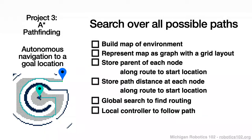Moving toward project three: we'll build a map of our environment, search for a path in that environment given the map, then have a local controller follow that path. At that point you are doing autonomous pathfinding — at the cusp of the state of the art in robot pathfinding — and you'll do it all in just two months. Give yourself a pat on the back after you get the assignment done.